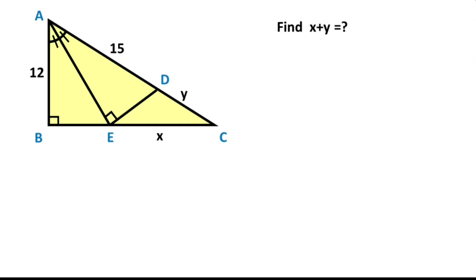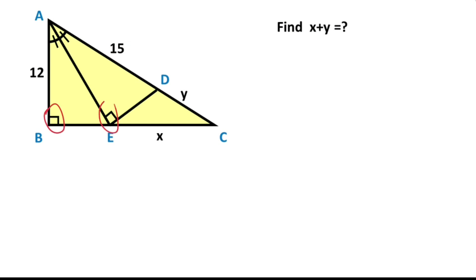Hello everyone. In this video you have a right triangle and there is an angle bisector line here. This length is given 12 units and here is given 15 units. The angle is given 90 degrees and the question is: what is the sum of x and y?